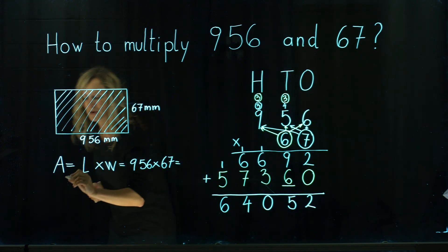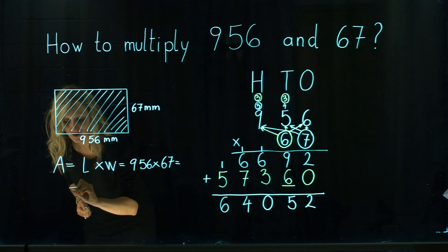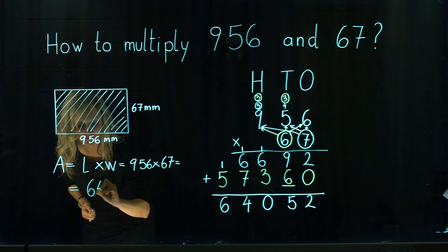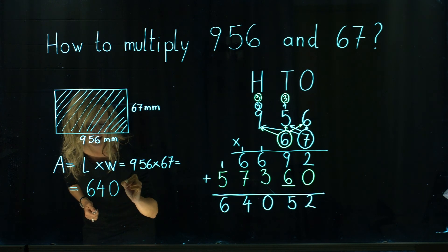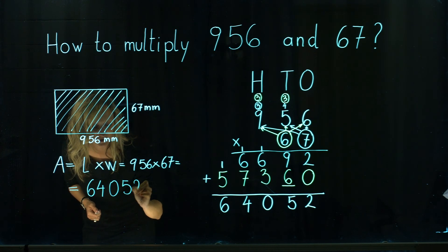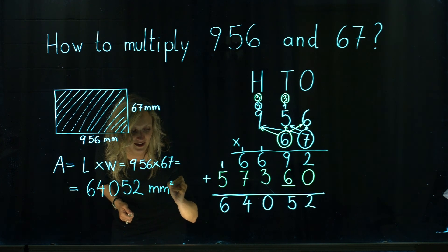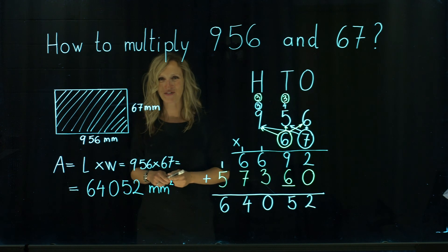So the answer for our question 956 multiplied by 67 is 64,052. We could actually write here as well. So we found the area which is 64,052 millimeters squared. Thank you for watching.